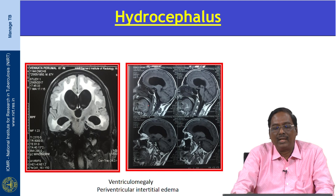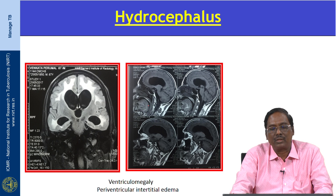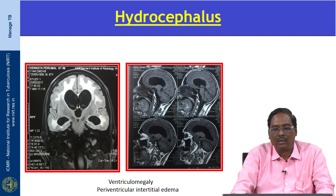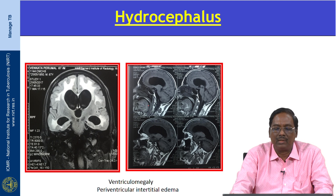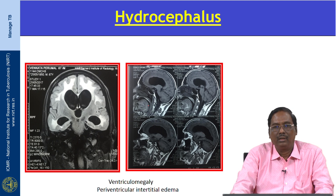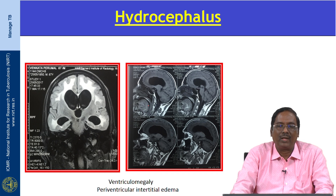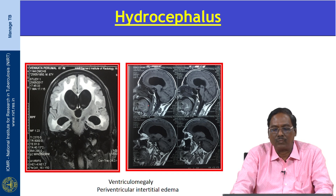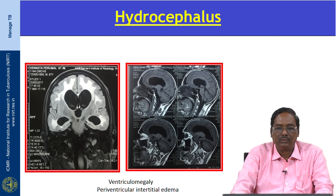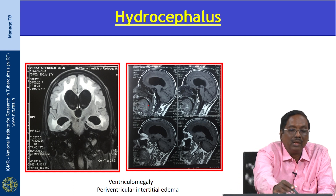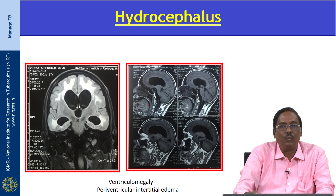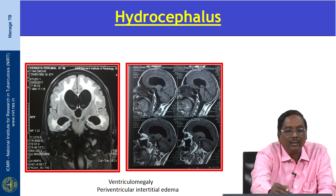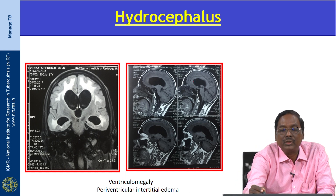Next is hydrocephalus, the most common complication of tuberculosis meningitis, occurring in 85 percent of children with the disease, and more severe in children than adults. There are two types: communicating hydrocephalus and obstructive hydrocephalus. This MRI shows ventriculomegaly and periventricular interstitial edema.